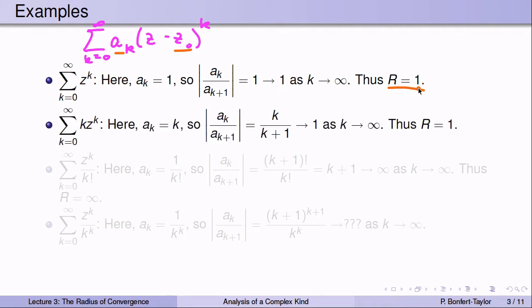Here's another example: the series sum of k·z^k. Here the a_k's are equal to k and z_0 equals 0. Looking at a_k divided by a_{k+1}, that's k over k+1, and in absolute value that sequence converges to 1 as k goes to infinity. Therefore, the radius of convergence for this series is also equal to 1.